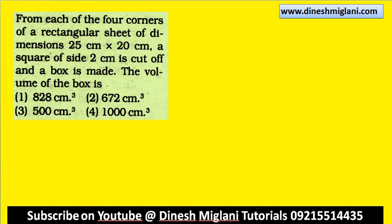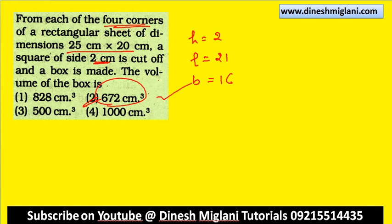From each of the 4 corners of a rectangular sheet of 25 by 20, a square of 2 cm is cut. We have to find the volume of the box formed. Height = 2, length = 25 minus 4 = 21, breadth = 20 minus 4 = 16. Volume = 2 into 21 into 16 = 672 cubic cm. Second one is your answer.